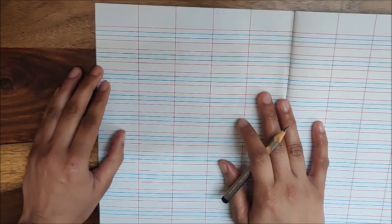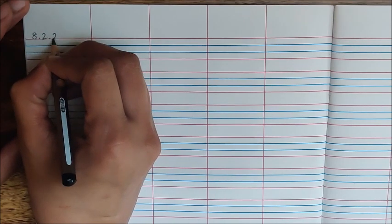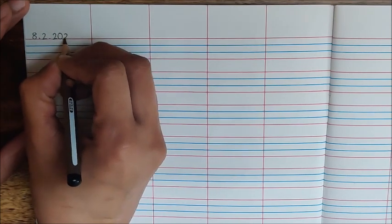Today is February 8th. Write the date. 8 dot, 2 dot, 20, 21.